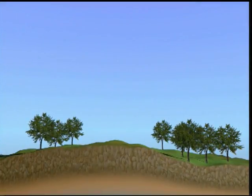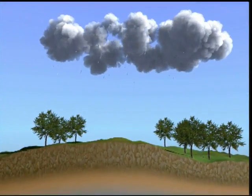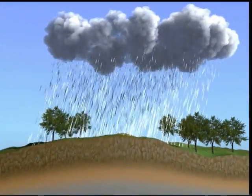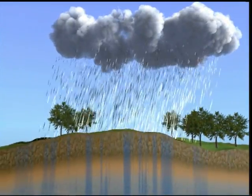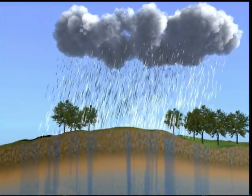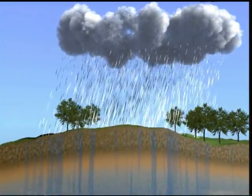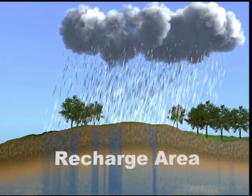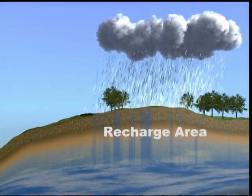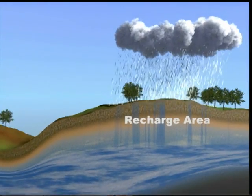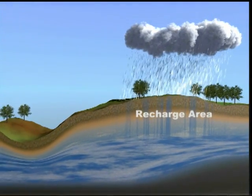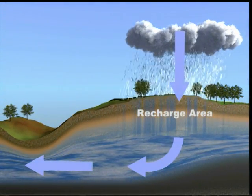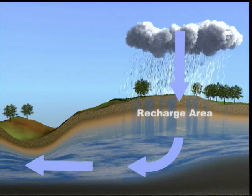Precipitation that percolates downward through porous surface soils is the primary source of water for groundwater. Surface areas having this downward flow are called recharge areas. Recharge areas primarily allow fresh rainwater into the aquifer, with recharge of fresh water typically occurring at the top of an aquifer.